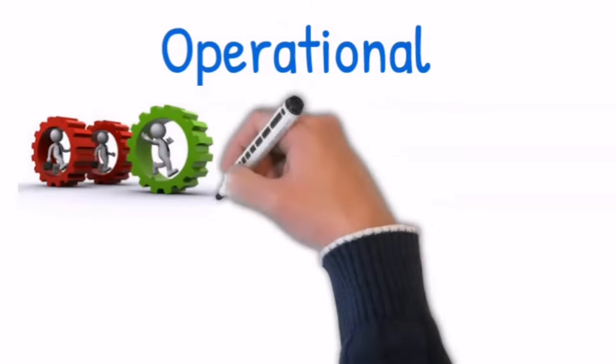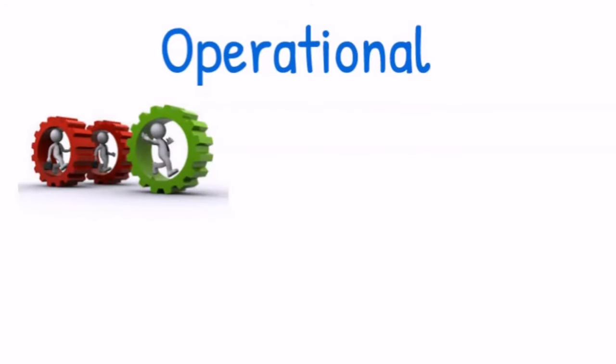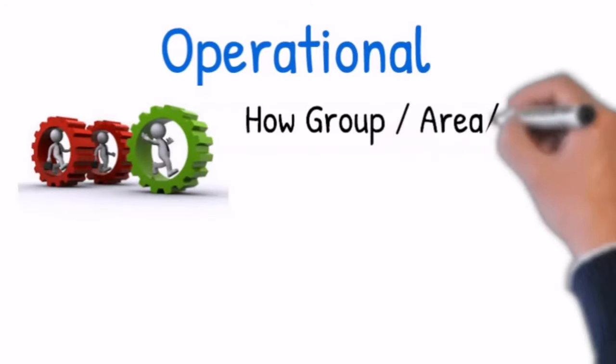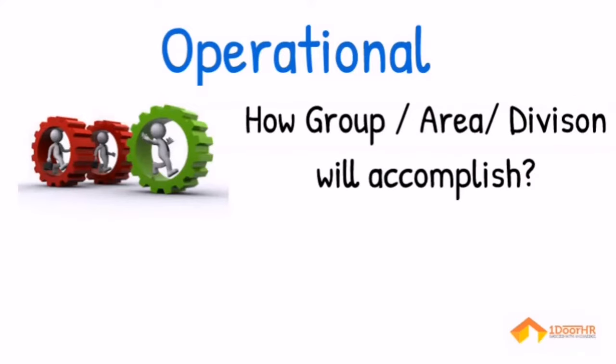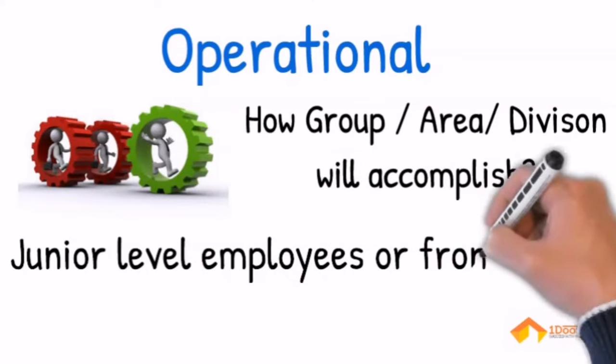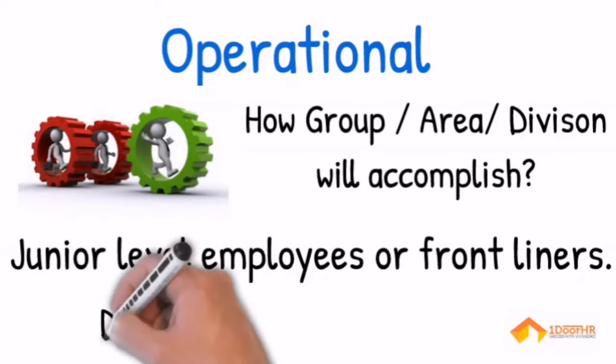The third one is operational. An operational plan is a point-by-point plan that gives us a way how a group or area will contribute to the accomplishment of the organization. Junior-level people or the frontliners define this. It is done on a daily or weekly basis.